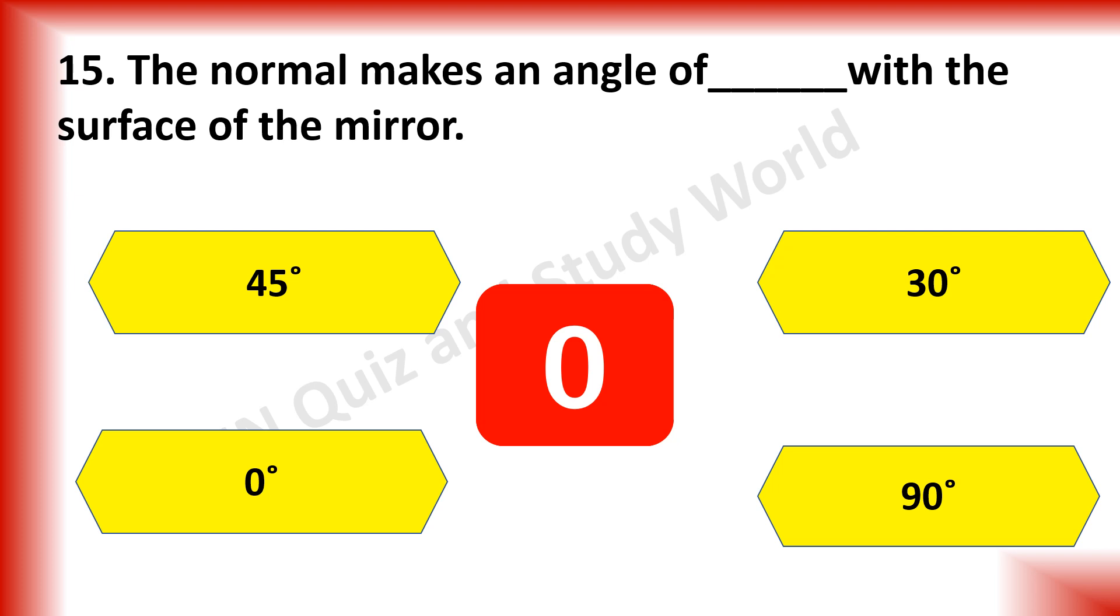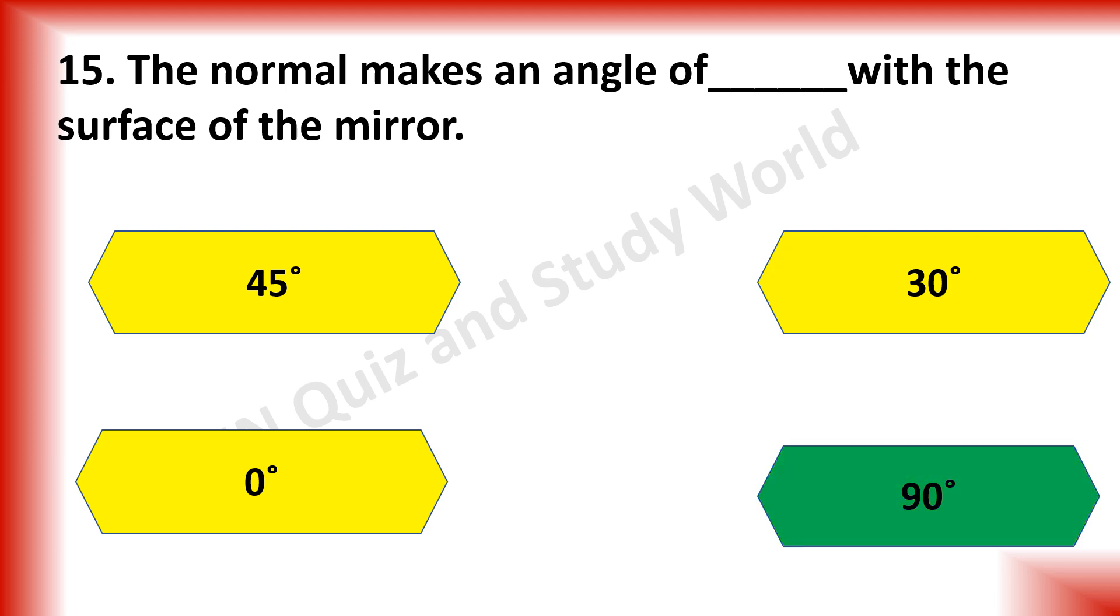The normal makes an angle of dash with the surface of the mirror. Is it 45 degree angle, 30 degree angle, 0 degree angle or 90 degree angle? The answer is 90 degree angle.